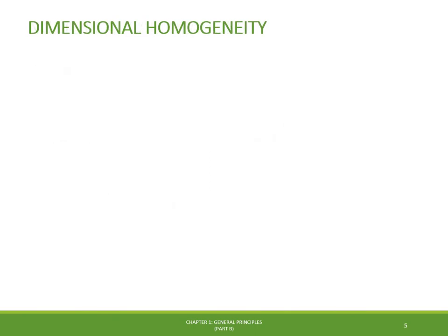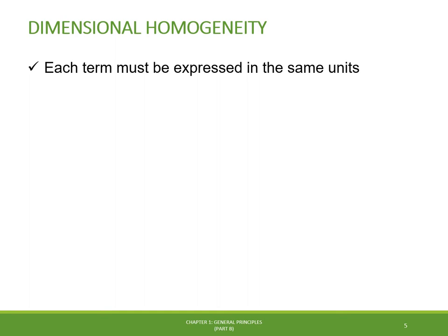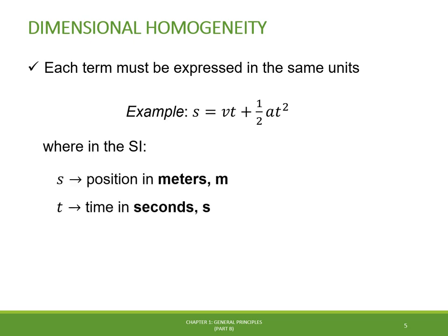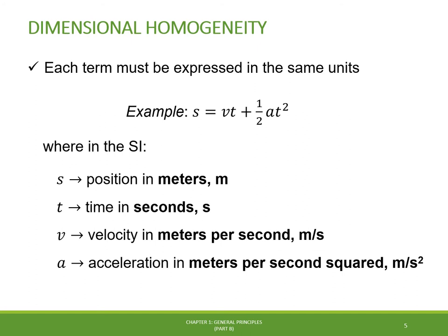The first thing we need to care about when solving any mathematical equation representing a physical process is its dimensional homogeneity, which means every term of the equation must be expressed with the same units before plugging in numerical values. For example, consider the equation describing the time variation of position for a particle under accelerated motion. Using SI units: S is position in meters, T is time in seconds, V is velocity in meters per second, and A is acceleration in meters per second squared. Ensuring all quantities are properly expressed in basic units maintains dimensional homogeneity regardless of how we solve the equation.